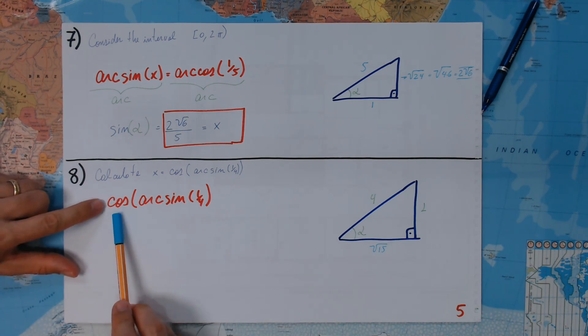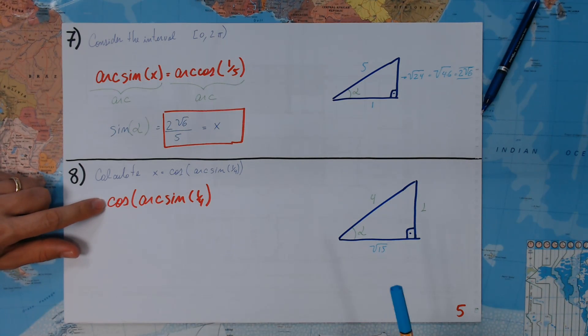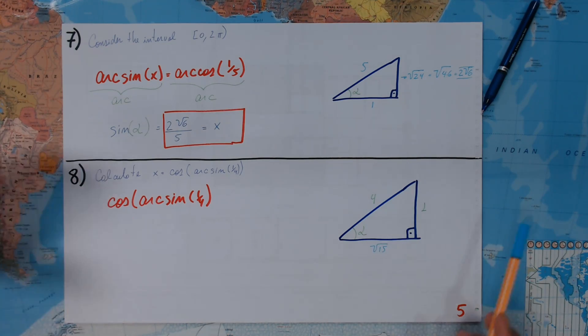Well, okay. Now, the question is, what is the cosine of a certain arc which has sine 1/4? Well, the cosine of that arc is going to be this over this. Straightforward again.